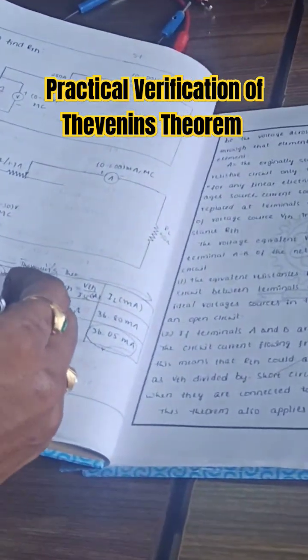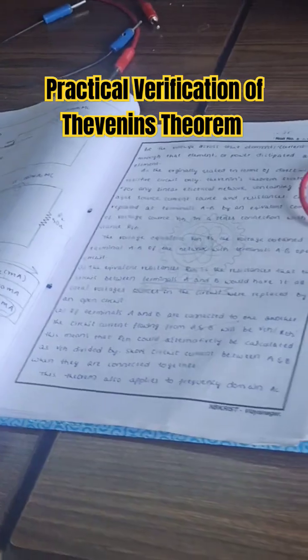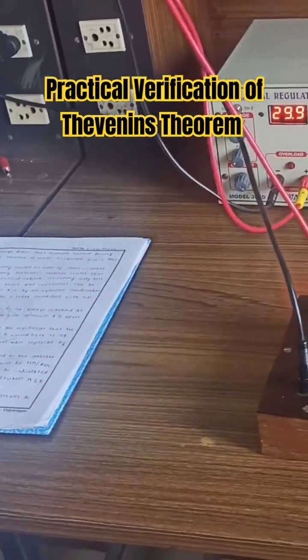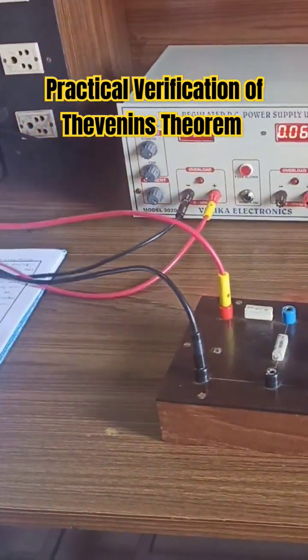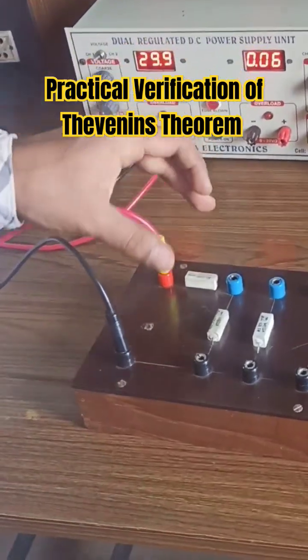First, we have to find out Thevenin's voltage. How to find the Thevenin's voltage is very simple: just apply 30 volts at the input of the port. This is nothing but 500 ohm resistor.